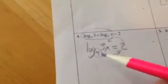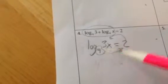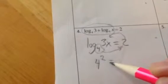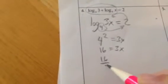My video cut out, but we'll jump right back in. I was just about to rewrite this in exponential form as 4 to the 2nd equals 3x. So 4 to the 2nd equals 3x, so 16 equals 3x. Just divide by 3 to solve for the x. 16 divided by 3 is x. And we've got it.